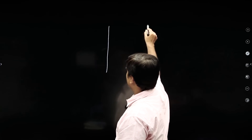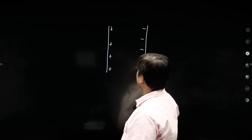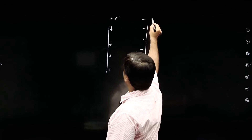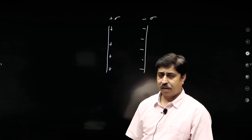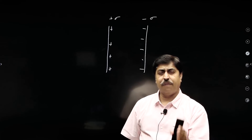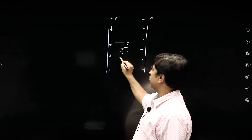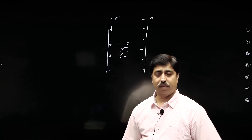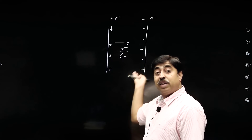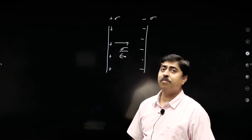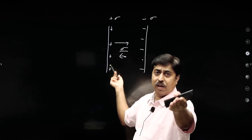While studying the parallel plate capacitor, if this plate has surface charge density sigma and the other has minus sigma, and I need the electric field in front of this conductor — I simply say this conductor has surface charge density sigma, so in front of it the electric field is sigma by epsilon naught. Full stop, nothing else. If you ask about the other charge, the answer is: it is the total electric field that I have written.